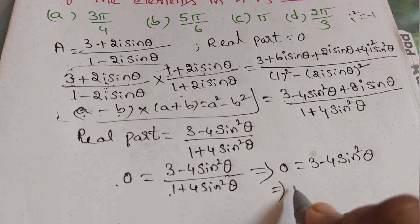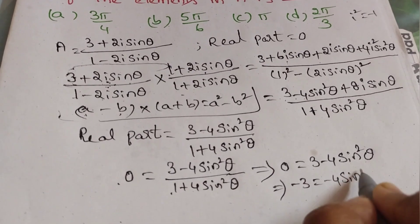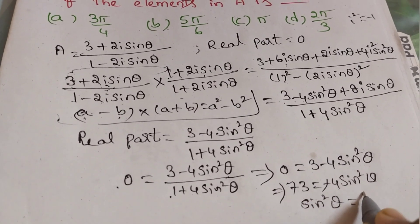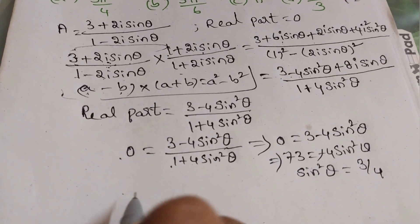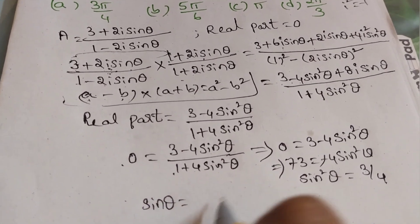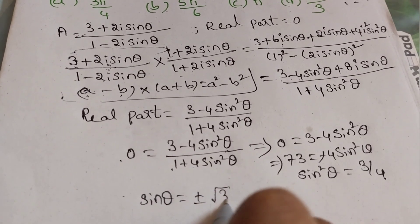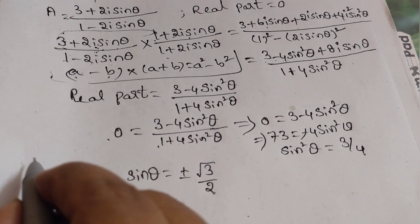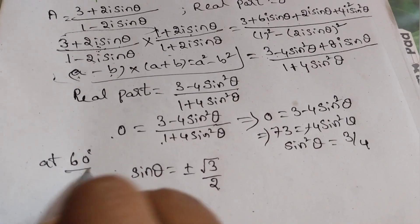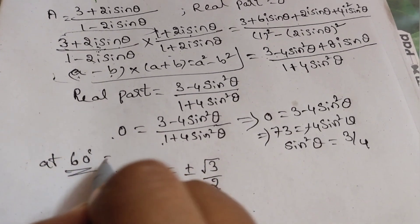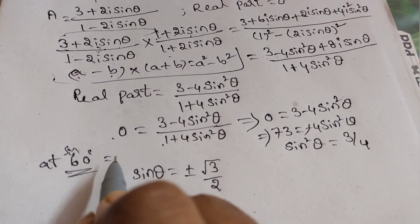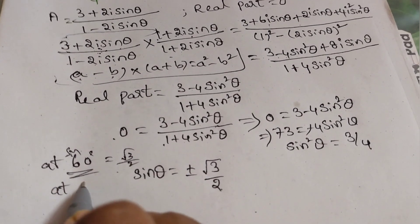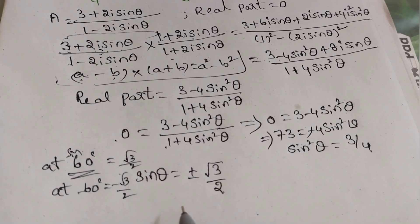From 3 minus 4 sin-squared theta equals 0, we get sin-squared theta equals 3 divided by 4. Therefore sin theta equals plus or minus root 3 by 2. We know root 3 by 2 corresponds to 60 degrees, and minus root 3 by 2 corresponds to minus 60 degrees.